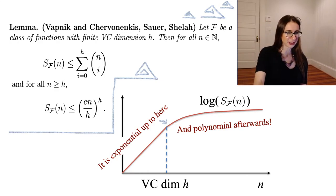We're usually not using functions that can shatter anything, right? We don't want that. So in that case, the growth function is upper bounded by this function of the VC dimension right here. So the VC dimension appears there and there. So that's pretty cool.